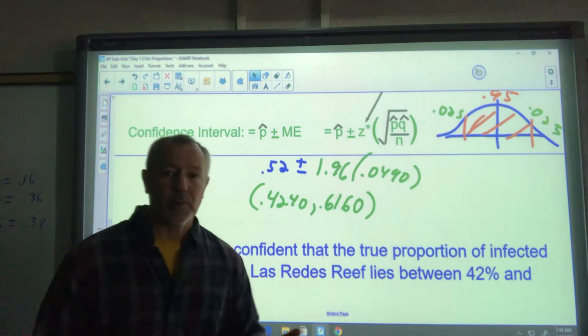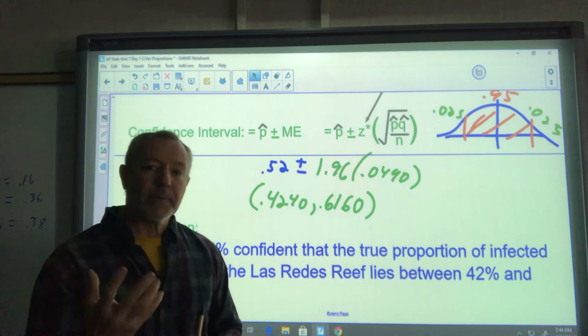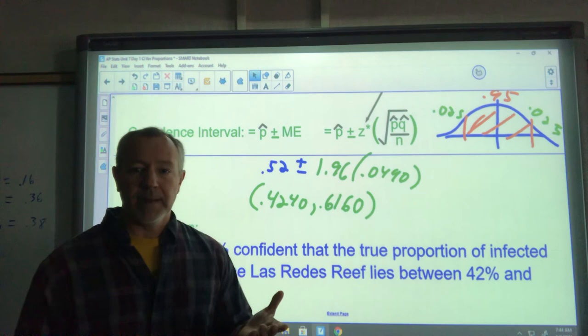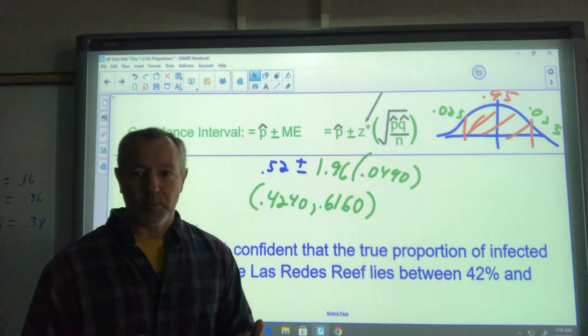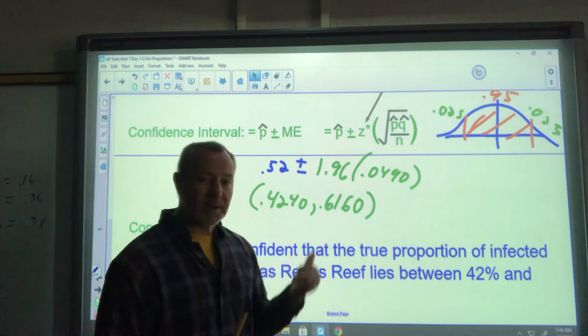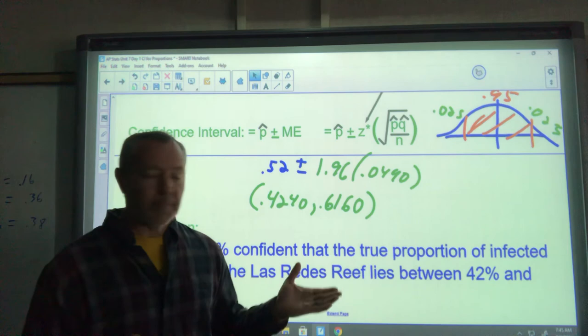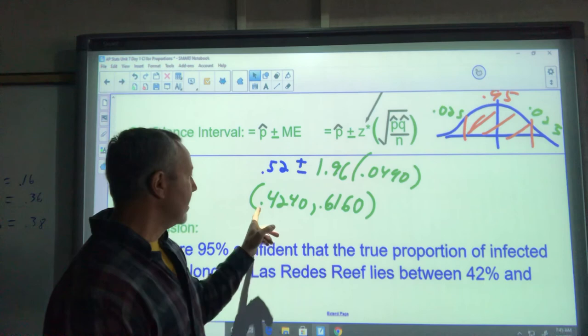Now, the reason I say it's not really true is that's not really the true meaning of the confidence interval. The true meaning of this interval is the 95% confidence means that if I were to do this process over and over again, 95% of the intervals I would get would contain the true proportion. And we're hoping that this interval we have between here and here is one of the good intervals.